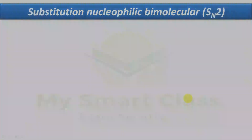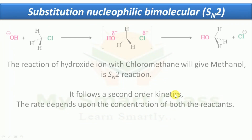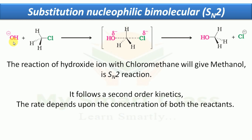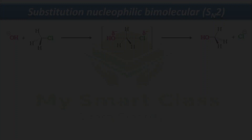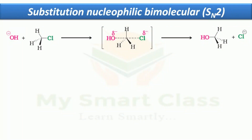We will first understand the SN2 reaction and then SN1. In the SN2 reaction, the reaction of hydroxide ion with chloromethane gives the product methanol. This reaction is considered SN2 because it follows second-order kinetics and the rate depends on the concentration of both reactants.